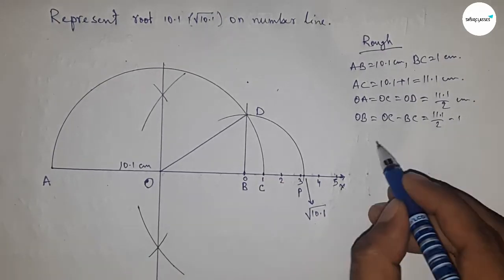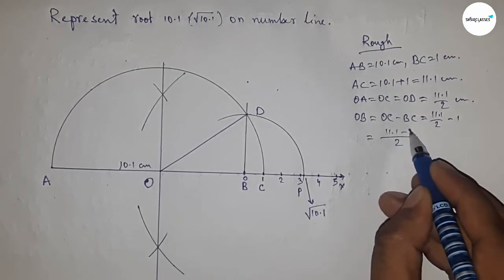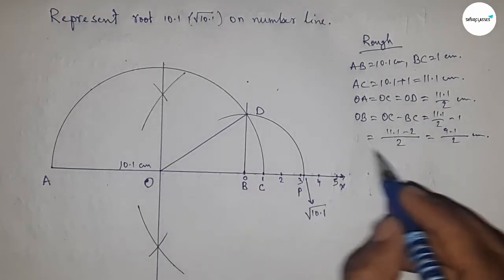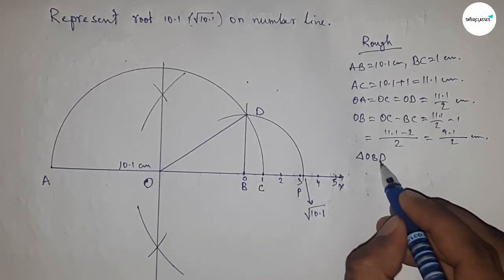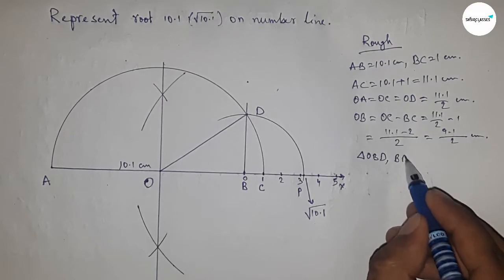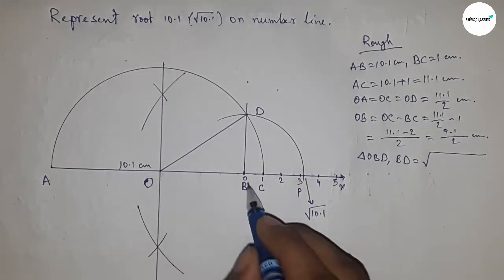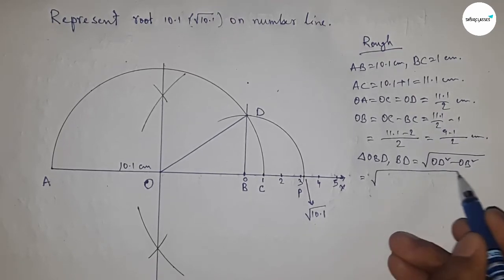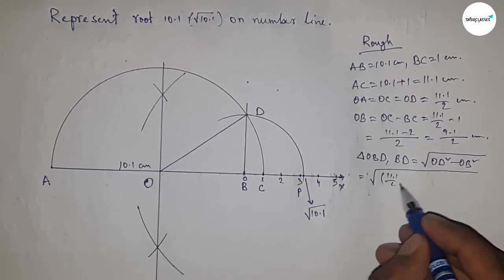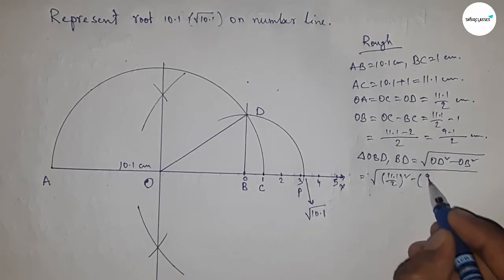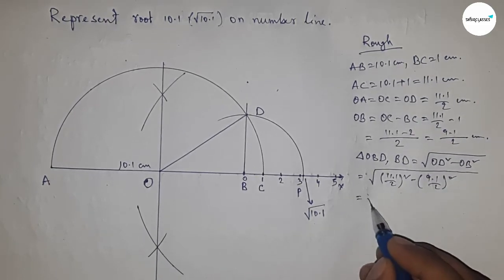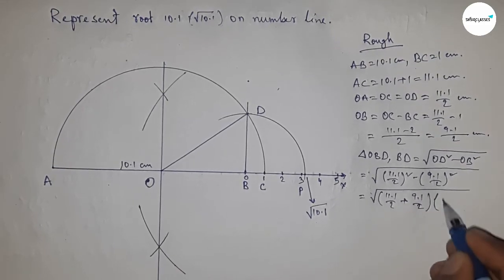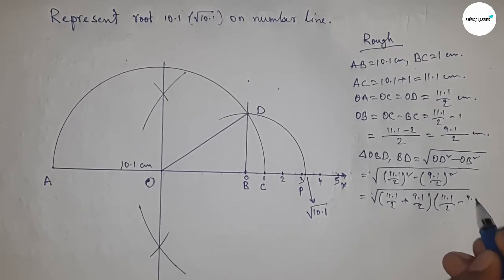Now from right angle triangle OBD, we can write BD equal to, by Pythagoras theorem, OD square minus OB square, hypotenuse square minus base square. Now putting the value of OD and OB, and next I am going to use a formula a square minus b square equal to a plus b times a minus b, so applying the formula here.